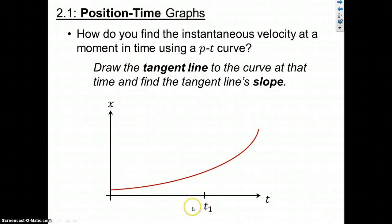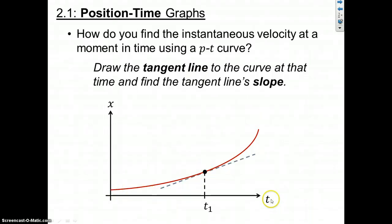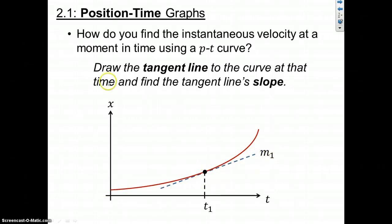Let's say we have some time T1, and we want to know the velocity at that particular time, which means we need to know the slope at that particular instant. You trace up from that time to the curve, mark that point on the curve, and then draw the tangent line. The tangent line is simply the straight line that only touches the curve at that point. You get a different tangent line at different points. M1 is the slope of the tangent - that is the slope of the curve at that point. Because slope and velocity are the same for an XT graph, M1 is the velocity the object has at time T1.